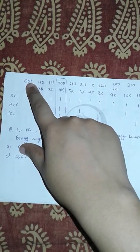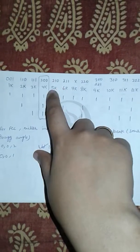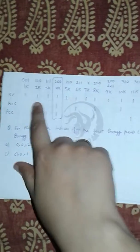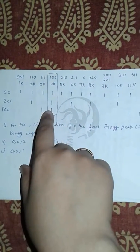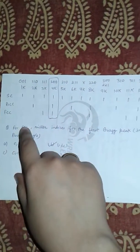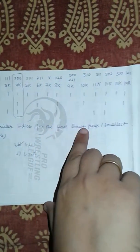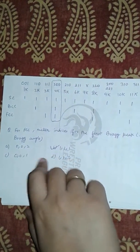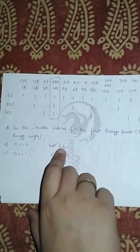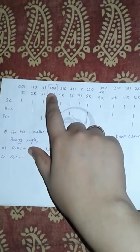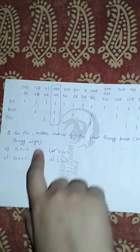Using the value of h² + k² + l² for each plane, we identify which planes lie in simple cubic, BCC, and FCC. All planes lie in simple cubic; for BCC, only those where h+k+l is even are allowed; for FCC, only those where hkl are all odd or all even. For the question asking the Miller indices for the first diffraction peak (smallest Bragg angle) in FCC, the answer is (1,1,1), since it is all odd and appears as the first allowed peak for FCC.